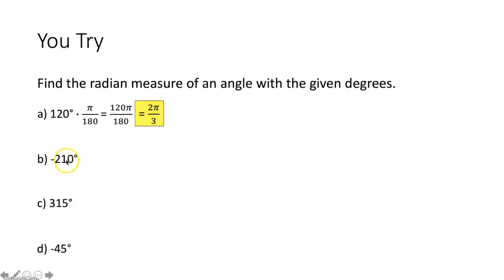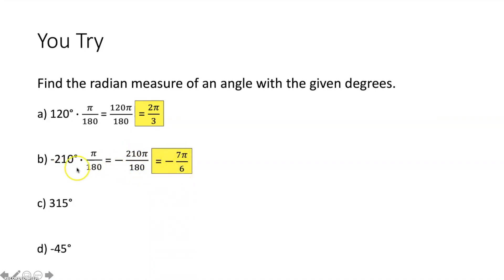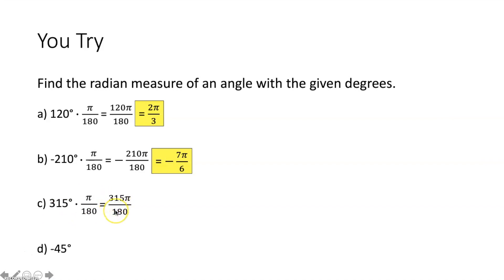Part b, we want to convert negative 210 degrees to radians. We multiply by π over 180. Imagining 210 as over 1, multiply numerators and denominators together. Simplifying 210 over 180 gives you 7 over 6. Therefore, negative 210 degrees is equivalent to negative 7π over 6 radians. Part c, we want to convert 315 degrees to radians. We multiply by π over 180. Multiplying together: 315 over 180 simplifies down to 7 over 4. Therefore, 315 degrees is equivalent to 7π over 4 radians.